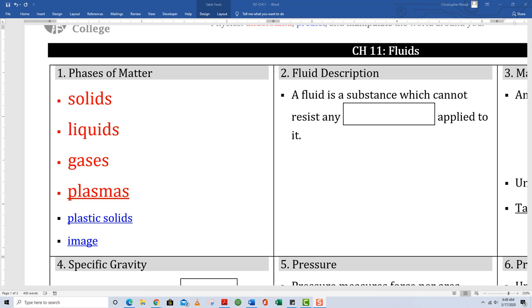There are four phases of matter. Number 1, solids. Number 2, liquids. Number 3, gases. And number 4, something called plasmas.